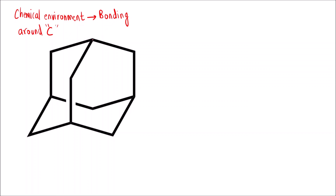Now, if you look at this carbon, it is attached to 1 hydrogen and 3 carbons. Similarly, this carbon is also attached to 1 hydrogen and 3 other carbons, and this one as well. So we can label these 4 carbons as group A atoms. These 4 A atoms will give 1 signal because they are present in the same chemical environment.